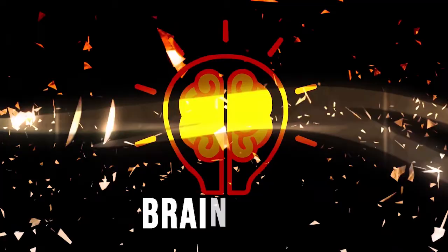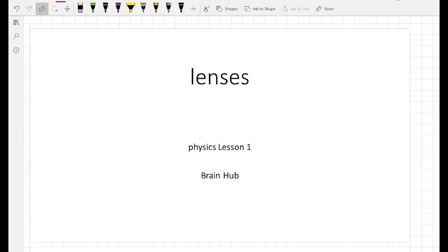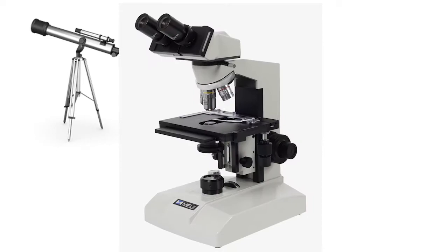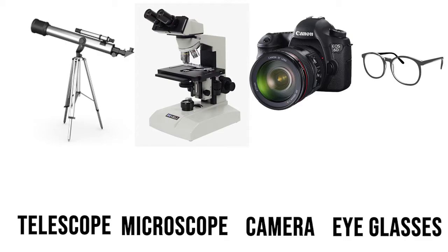Hi, welcome to Brain Hub. This is a Grade 9 physics lecture on the first chapter: lenses. In this chapter we are going to define a lens, how a lens forms an image from a luminous object, and how a telescope, microscope, camera, and eyeglasses form an image, because all these optical instruments have one or more thin lenses.